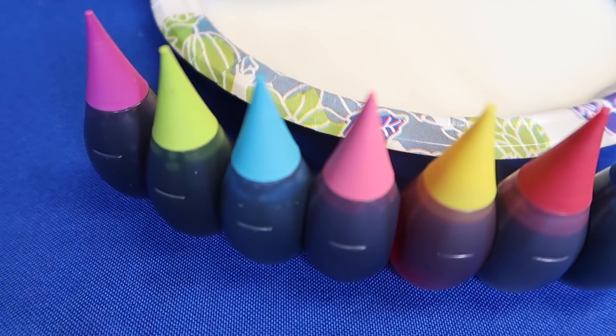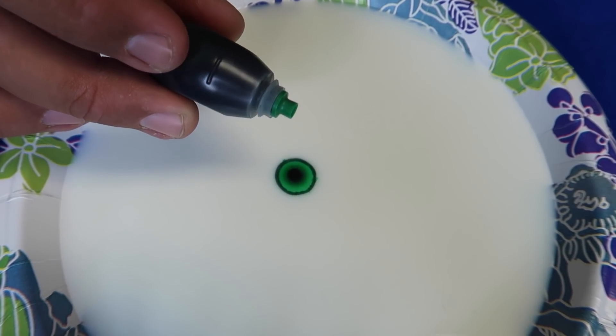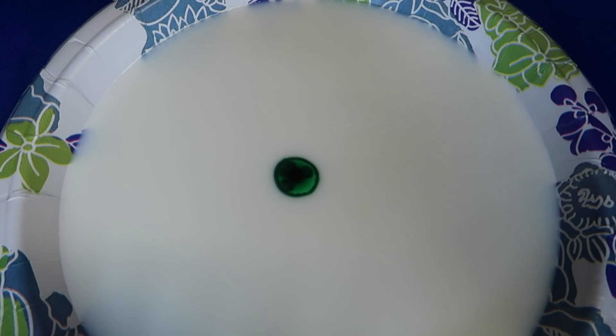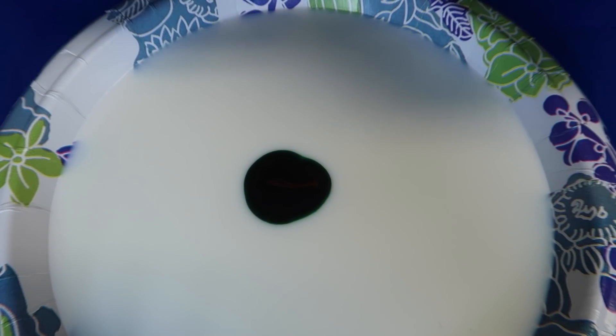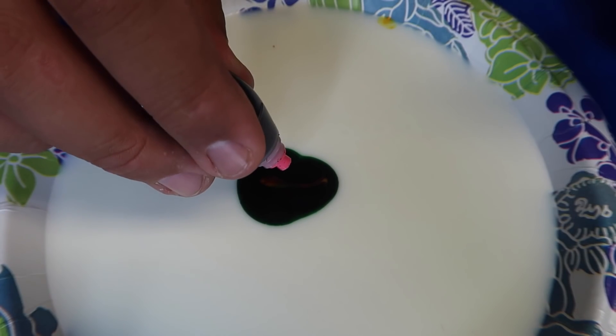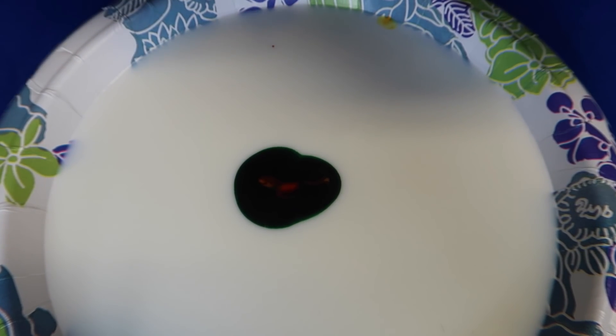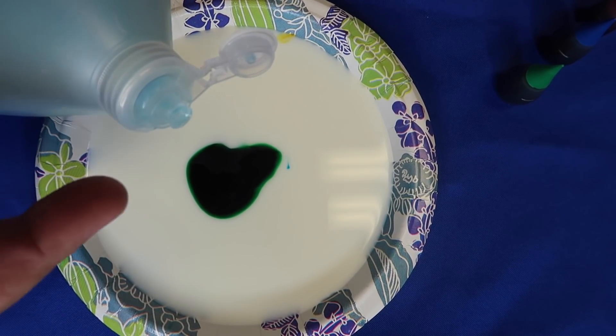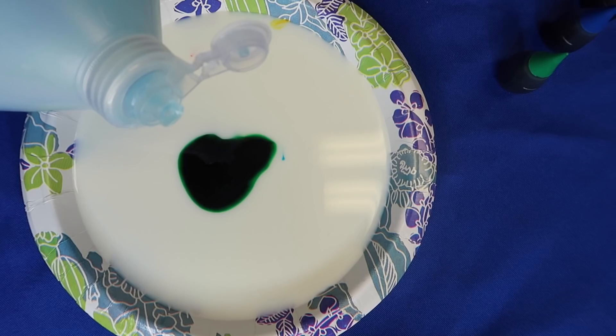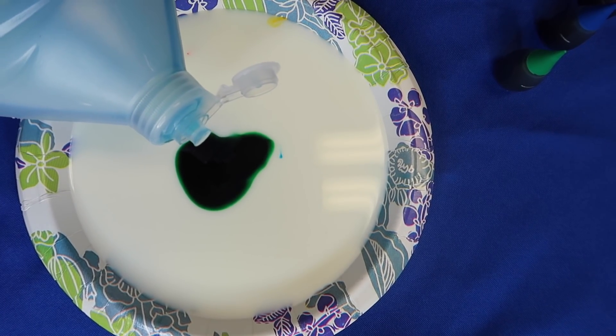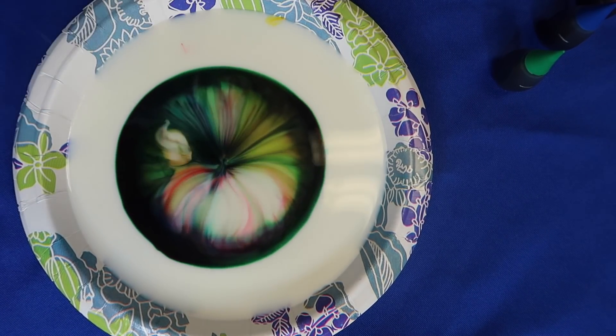So your next step is to take a drop of each one of the food colors and put them in the middle of the puddle of milk. We have eight different colors of food coloring here. Should make for a lot of cool different colors. Now the last step is just to add a small drop of dish detergent to the middle of the food coloring pool. You want to do that right in the middle, just a small drop will do it. Whoa!